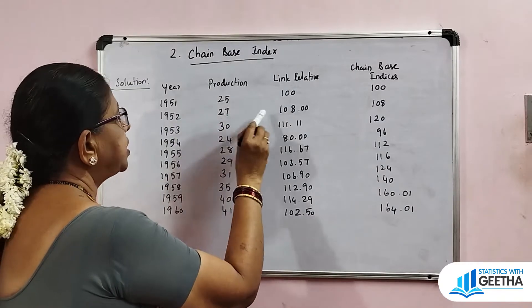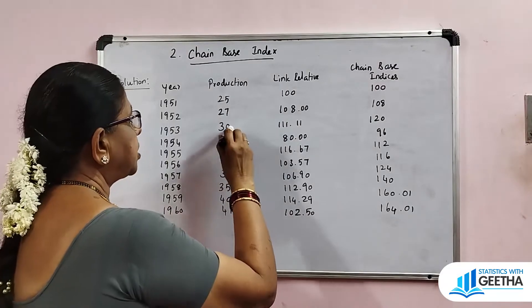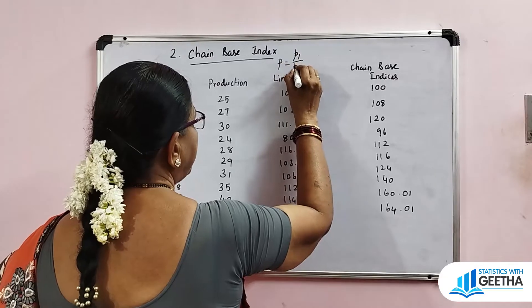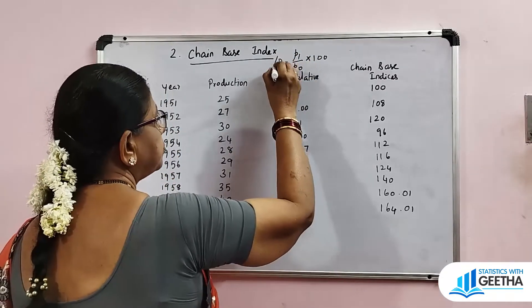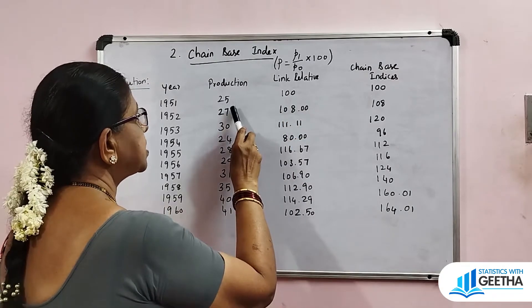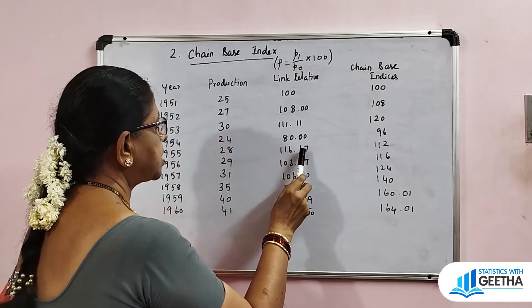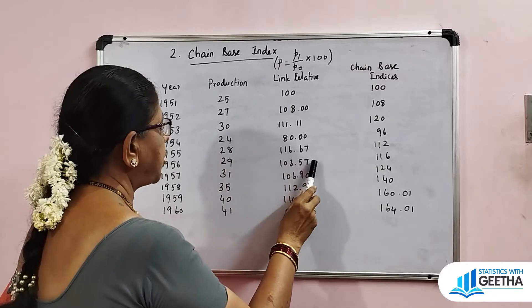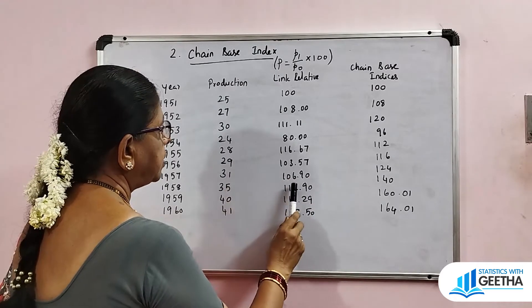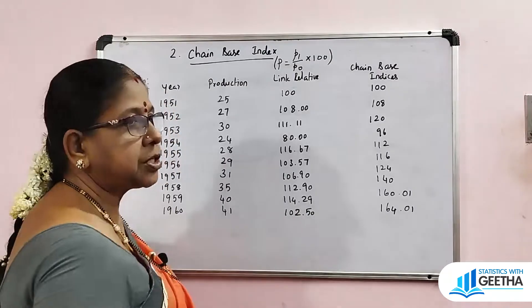For the second year 1952, the link relative is 27 divided by 25 into 100. For the next year, 30 by 27 into 100. Then 24 by 30 into 100, that is 80. Then 28 by 24 into 100, which is 116.67. Then 29 by 28 into 100, which is 103.57. Then 31 by 29 into 100, which is 106.90. Then 35 by 31 into 100, which is 112.90. Then 40 by 35 into 100, which is 114.29. And 41 by 40 into 100, which is 102.50. These are the link relatives.